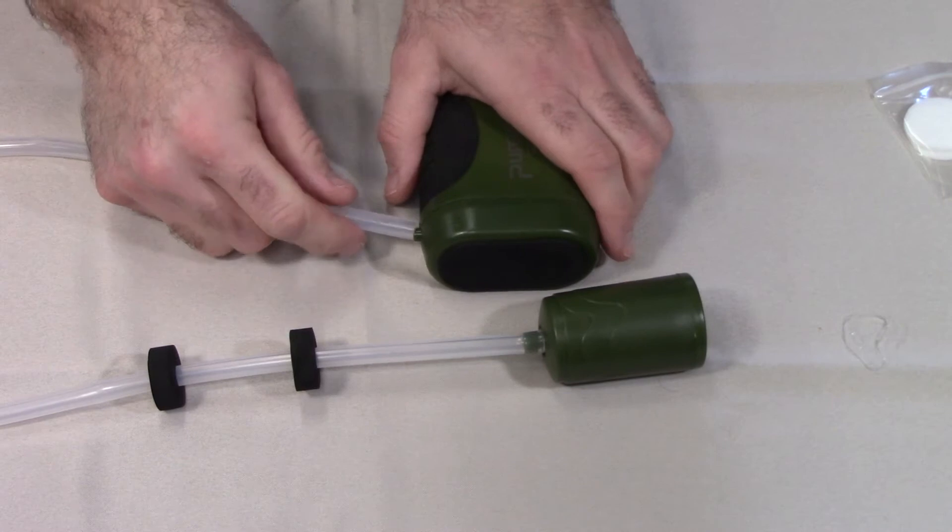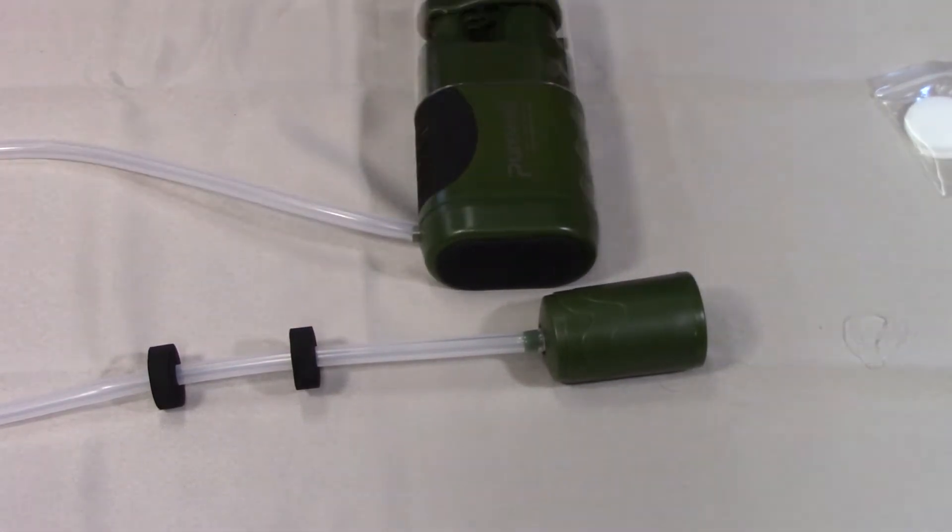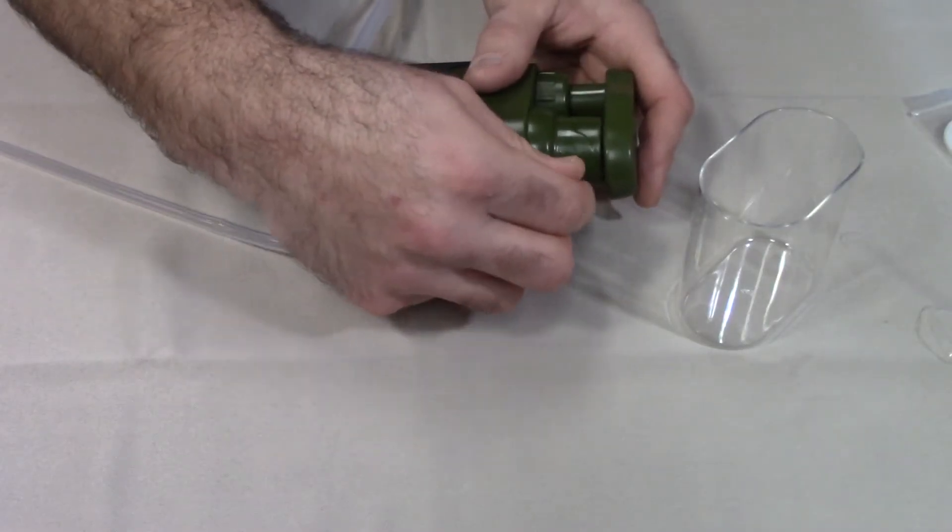Take the other end of the hose and connect to the bottom of the filter. Take the shorter hose and connect to the top of your filter.